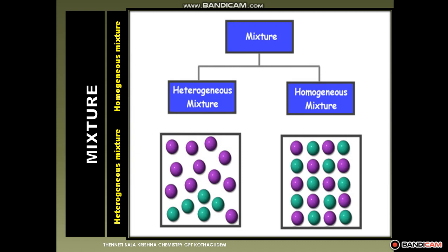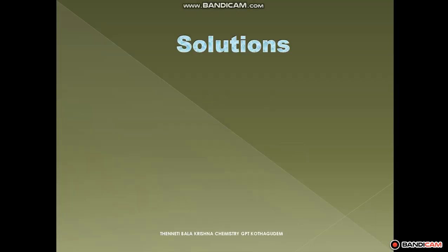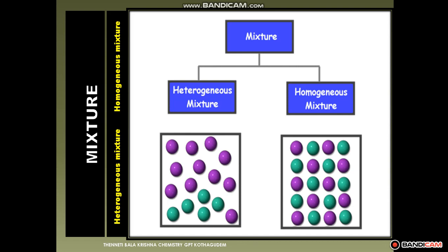Mixtures are classified into two types: one is a heterogeneous mixture and one is a homogeneous mixture. What is the difference between heterogeneous mixture and homogeneous mixture? In a heterogeneous mixture, you can easily identify one component from another component. You cannot identify one component from another after mixing the components in a homogeneous mixture.